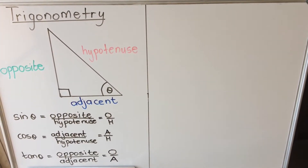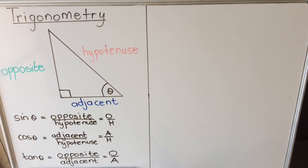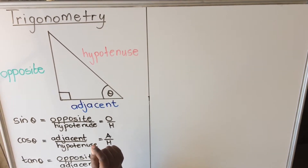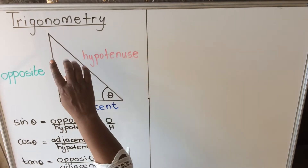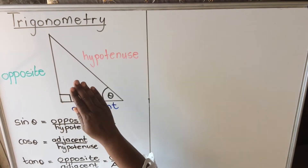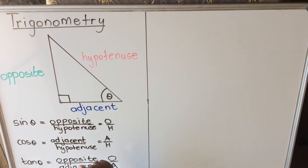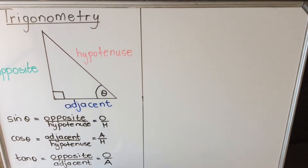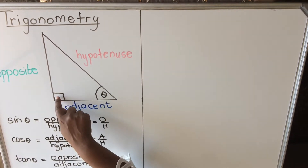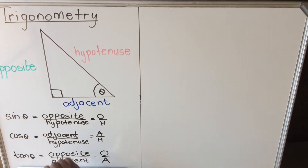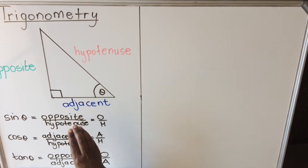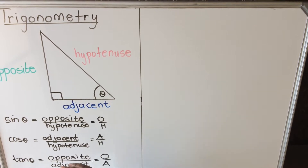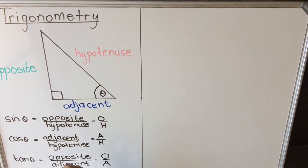Hello everyone, this is a lesson on trigonometry, particularly for Grade 10s. The word 'tri' means three, so trigonometry deals with triangles. In Grade 10 we deal with a specific kind of triangle: the right-angle triangle, which has a 90-degree angle. We are introduced to trig ratios — a ratio is something over something, relating the sides of the triangle.